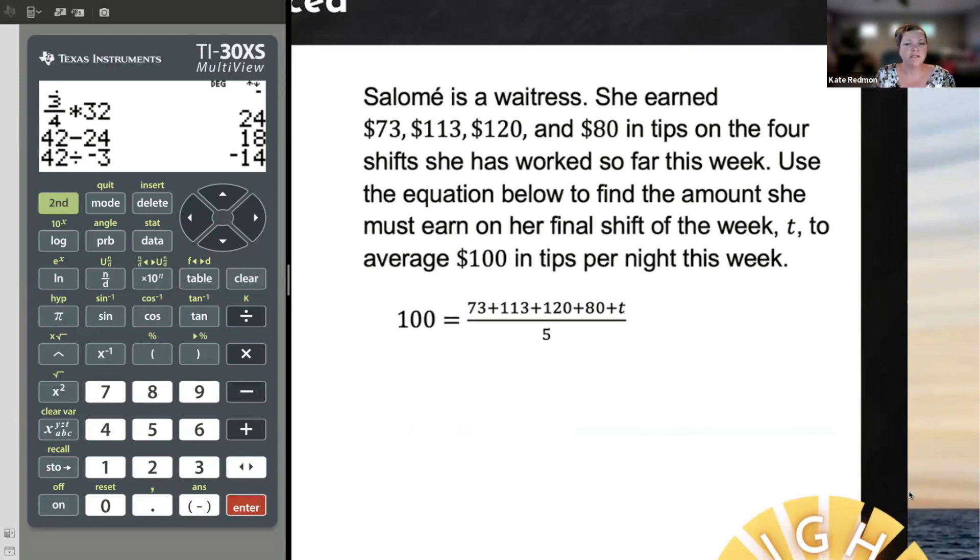Still want to do this example with you because this is another place where students would get really psyched out because you guys are over here like, oh my gosh, it's a word problem. It's algebra and it's a fraction all together. And so it must be three times as hard, right? All those things are hard. So this must be three times as hard. Well, this is one of those cases where algebra is going to make both fractions and word problems easier. So Salomé is a waitress. She earned $73, $113, $120 and $80 in tips on the four shifts she has worked so far. So far this week. Nice information. Still don't know what I'm doing.